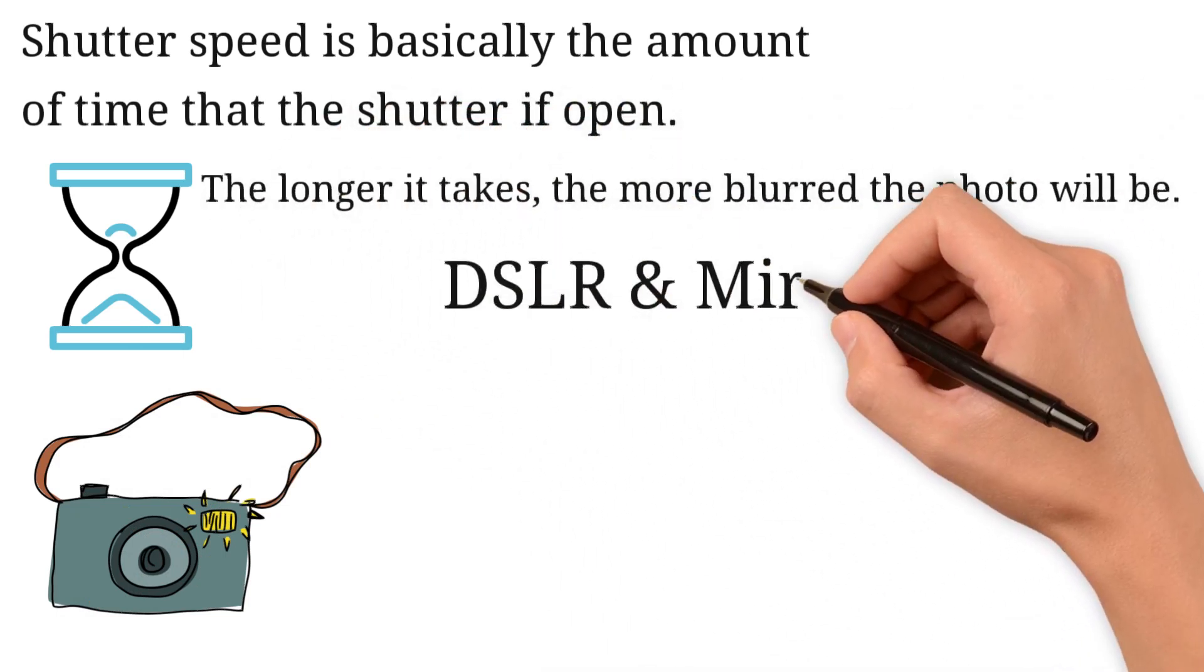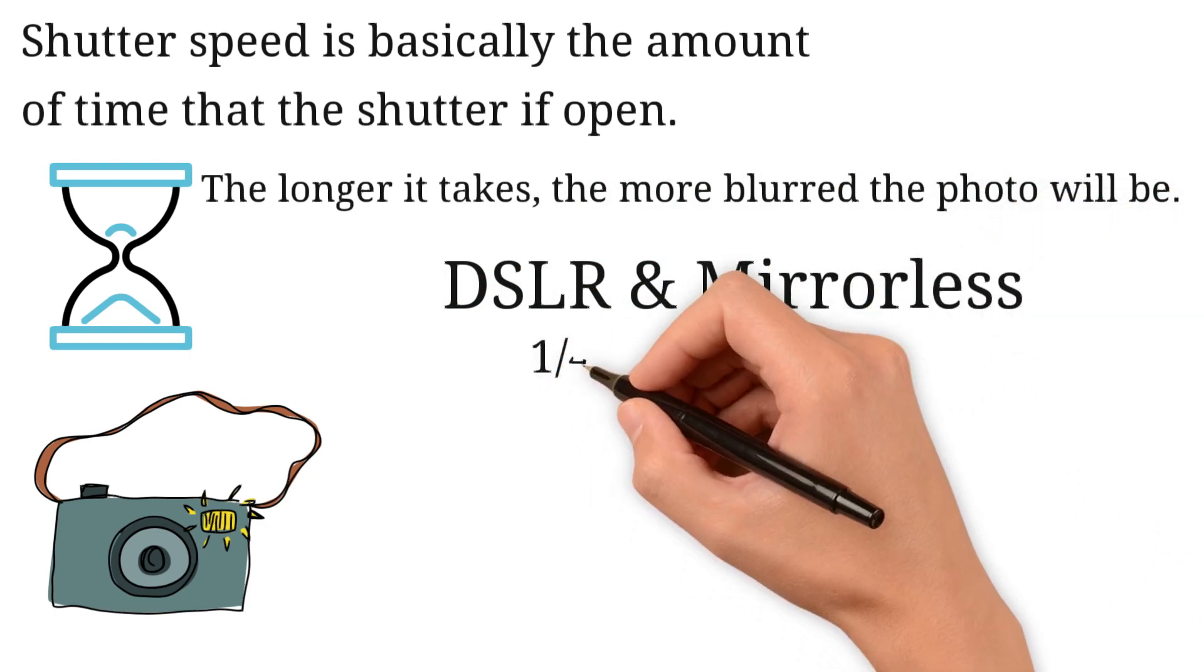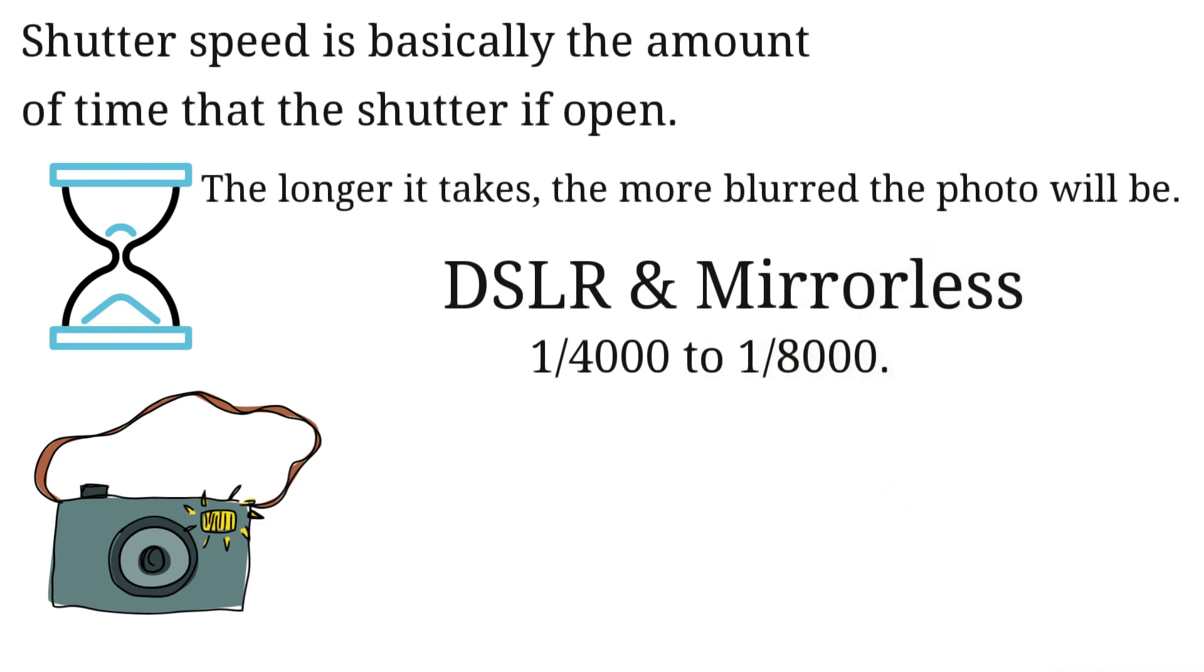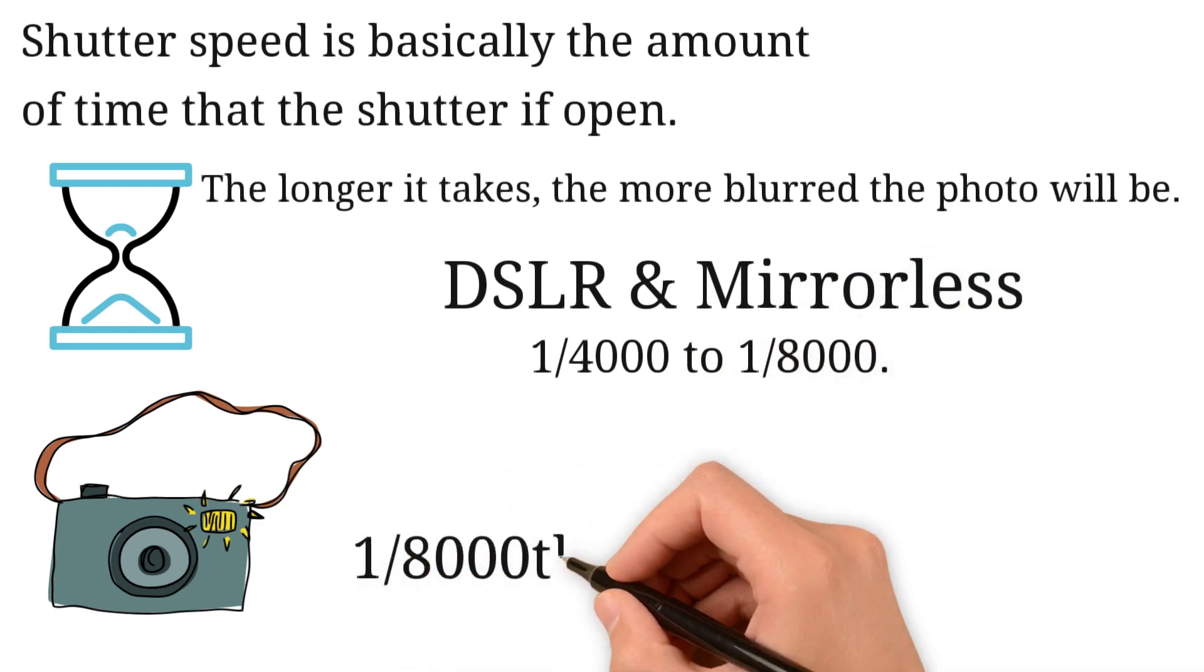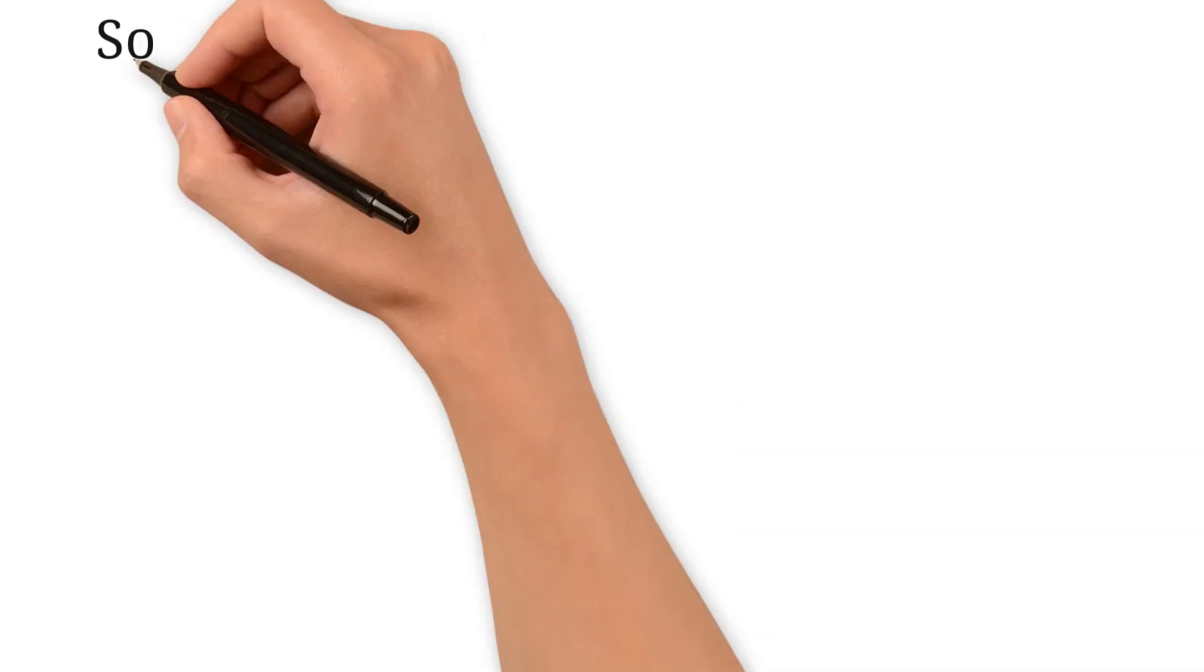Most modern DSLR and mirrorless cameras have a very fast shutter speed, ranging from 1/4000 to 1/8000. This means that it takes the camera 1/8000th of the second to capture the image.